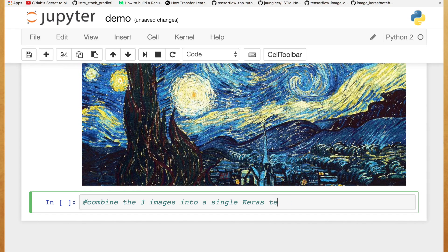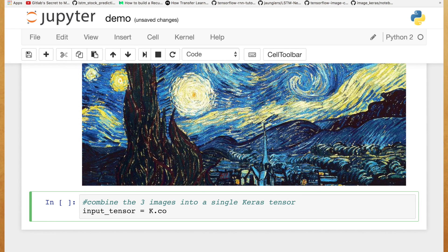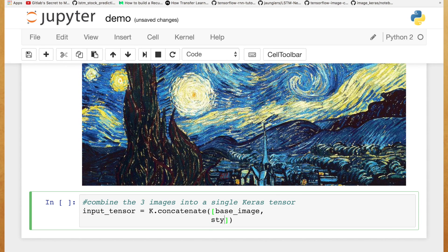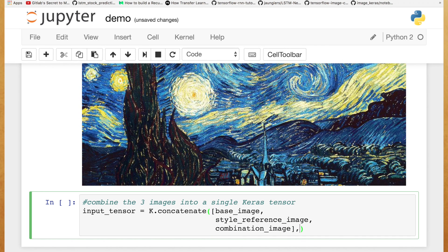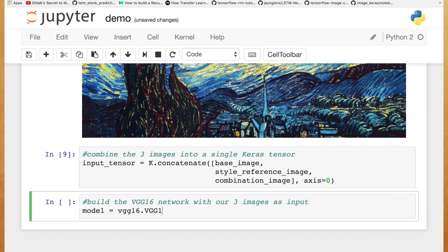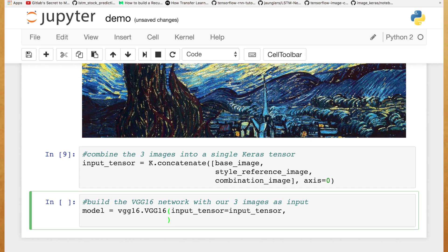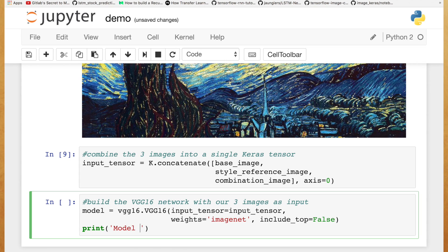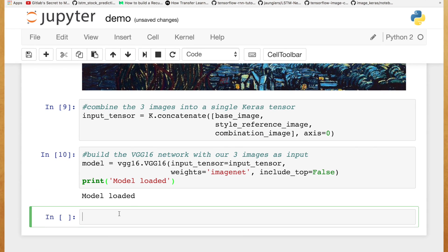Now, we'll want to combine these three images into a single tensor that we can feed into our model. We'll use the concatenate function to do this in just one line. The next step will be to download our pre-trained model called VGG16 that Keras has wrapped for us beautifully, setting our input to our newly created tensor and the weights to the ImageNet weights. We'll set include_top to false since we don't want to include the fully connected layer at the top of the network.